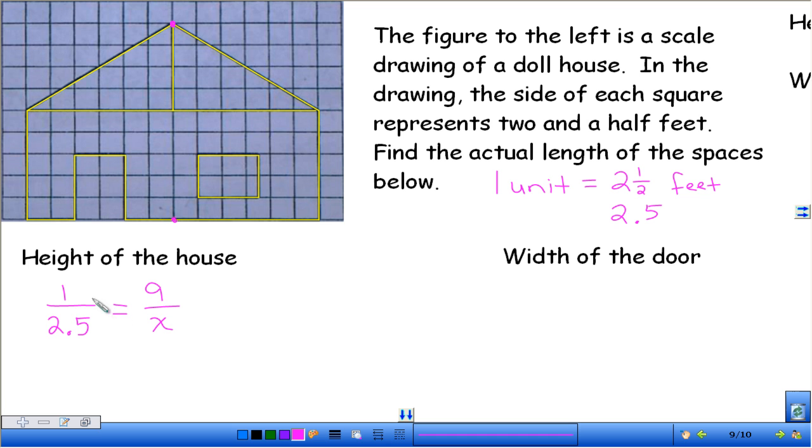So when we go through and cross-multiply, we get 1 times x, which is just x, equals, and then we have to do 2.5 times 9, so 9 times 5 is 45, and then 18 plus 4 is 22, and then count your decimal, so we have 1. So the actual height of the house is 22 and a half, or 22.5 feet.